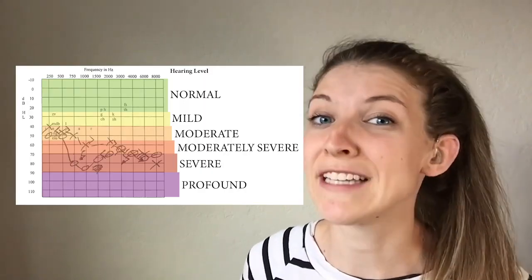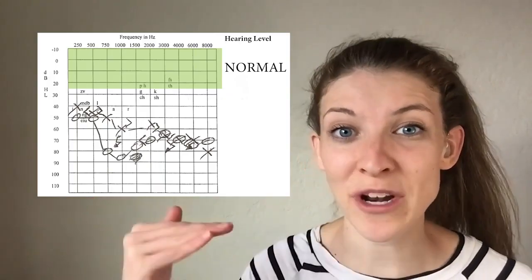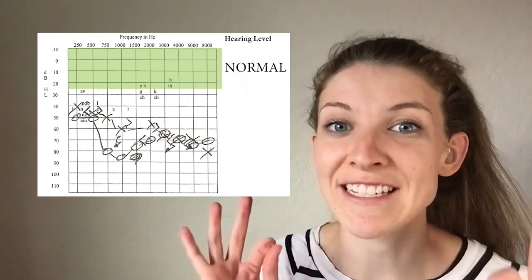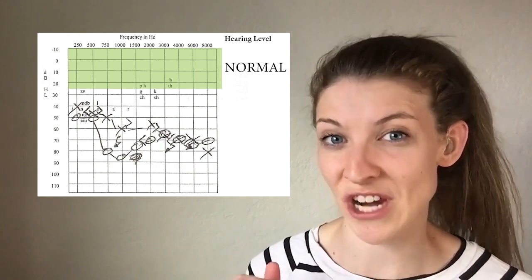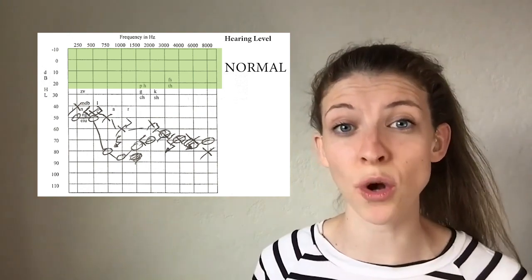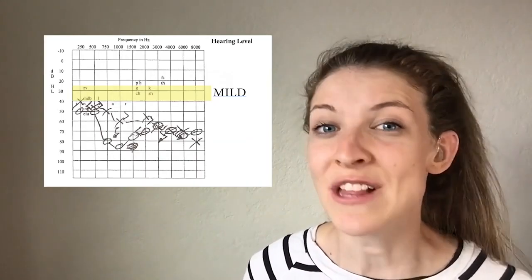Ranges of decibels create thresholds, and it's through these thresholds that we categorize how normal or profound someone's hearing is. From negative 10 to 25 decibels is considered normal hearing for adults. A caveat: for children it is different — normal hearing can be 0 to 15 decibels, and 16 to 25 decibels can be considered a slight loss for a child, so consult your pediatric audiologist if your child's hearing is in that range. The next threshold, 26 to 40 decibels, is a mild loss.